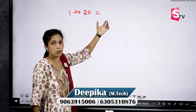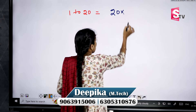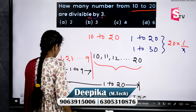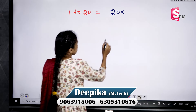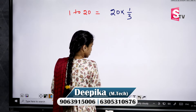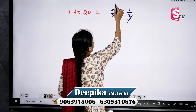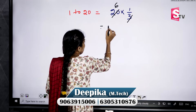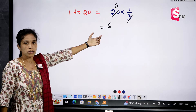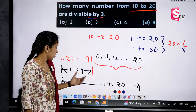For 1 to 20: total numbers are 20. We need divisibility by 3, so write 20 into 1 by 3. That is 3 goes into 20 six times — so from 1 to 20 we are getting 6 numbers divisible by 3.